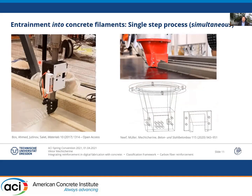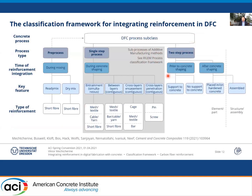Examples of a simultaneous process — truly in one step — include entrainment of reinforcement into concrete filaments. On the left, a proposal implemented in practice by a group from Eindhoven, where a metal cable is introduced directly into a filament and laid down together with it. What we use in Dresden is carbon yarn — up to six carbon yarns in one go — introduced directly into the filament.